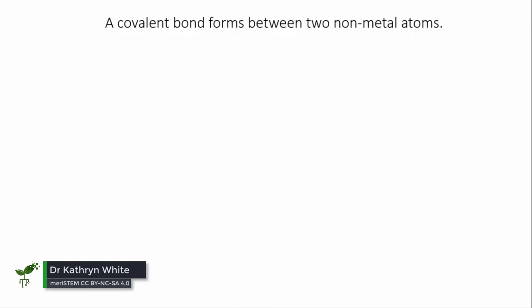First, remember that a single covalent bond is between two atoms and it involves one pair of shared electrons.